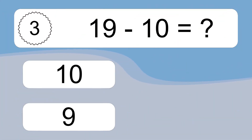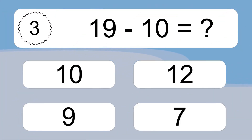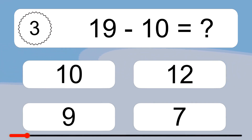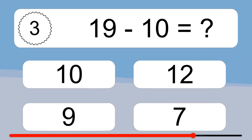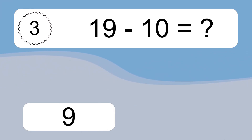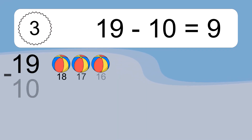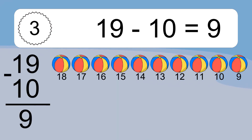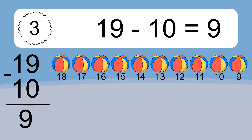19 minus 10 equals what? 19 minus 10 equals 9. Let's count it: 18, 17, 16, 15, 14, 13, 12, 11, 10, 9.